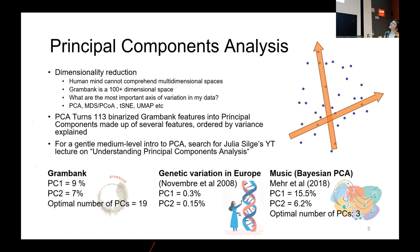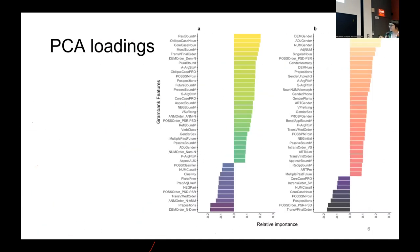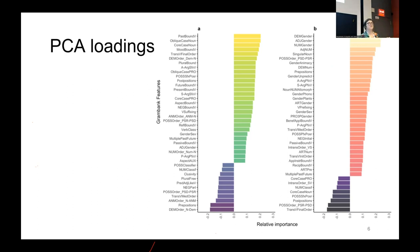If we look at what grammar features load onto the first two components — meaning which features contribute most to those dimensions — component one features are mostly about whether a marker is bound to something or freestanding, and component two features mostly concern gender and noun class. We verified this by computing a fusion score — how much a language uses bound features overall — and correlating it with PC1. They're quite correlated, telling us that one major dimension in our data relates to something similar to the isolating-agglutinative-polysynthetic scale.